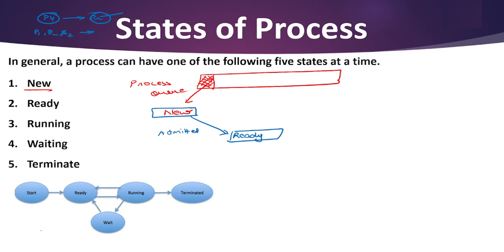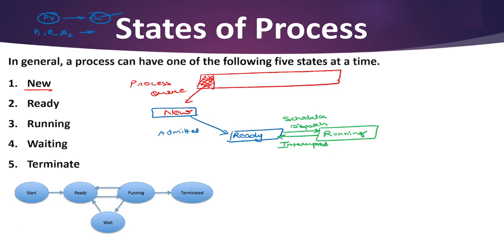Next is the Running state. Once the process is assigned, it gets executed and enters the Running state. The transition from Ready to Running is called scheduler dispatch. When our process goes back from Running to Ready, it is called an interrupt. Interruption is a very common and important topic in operating system processes — remember this point. Ready to Running is scheduler dispatch; Running back to Ready is an interrupt.